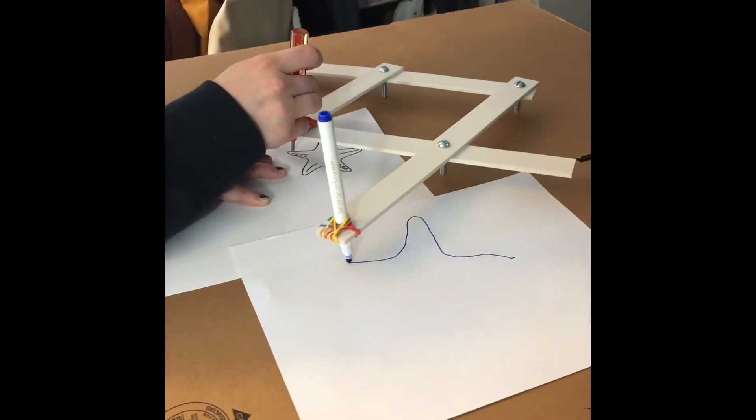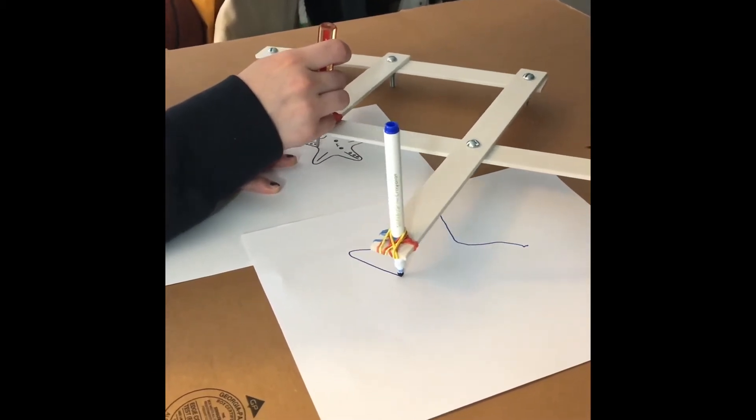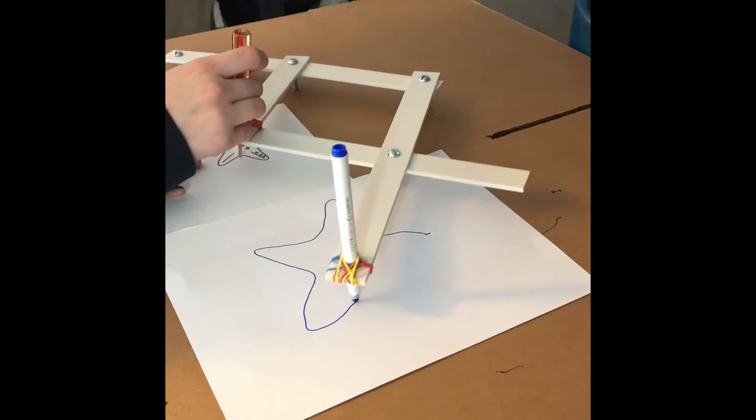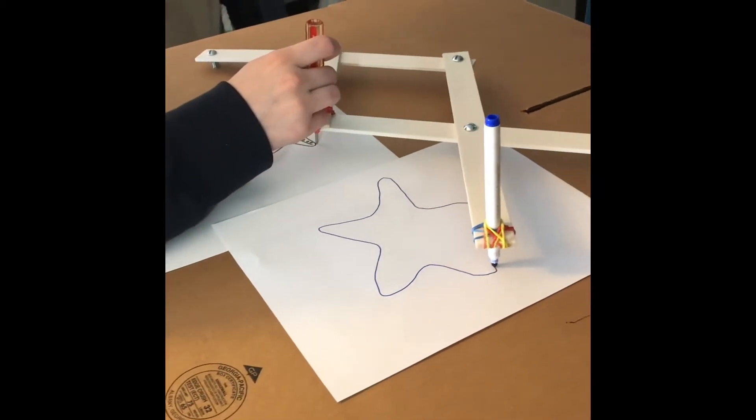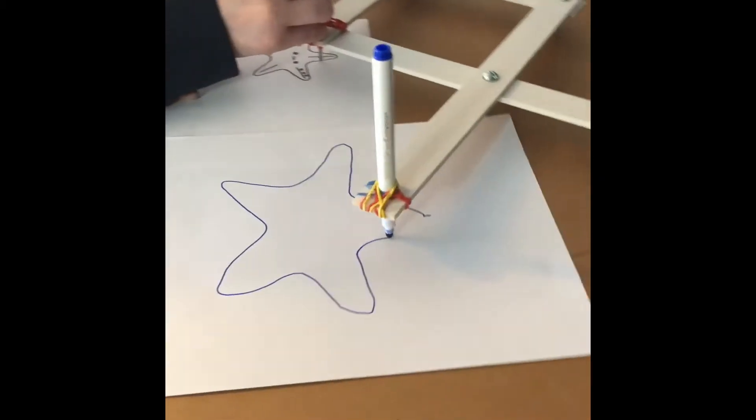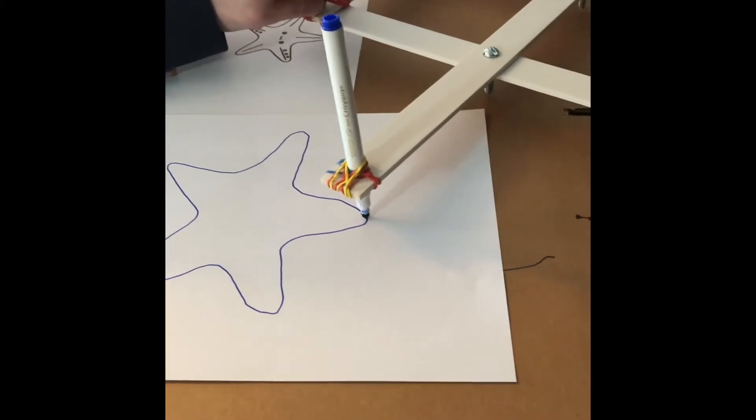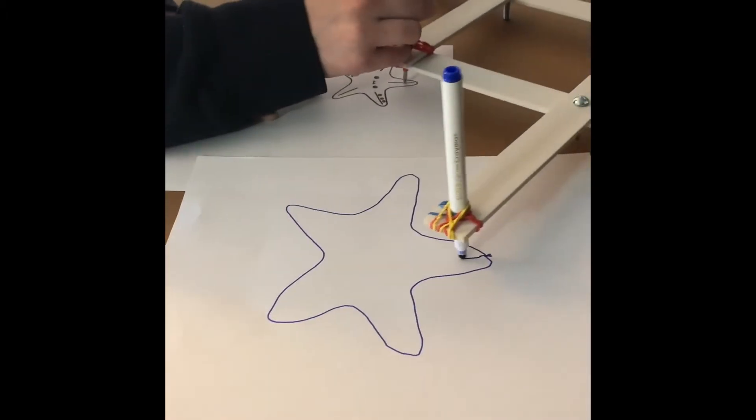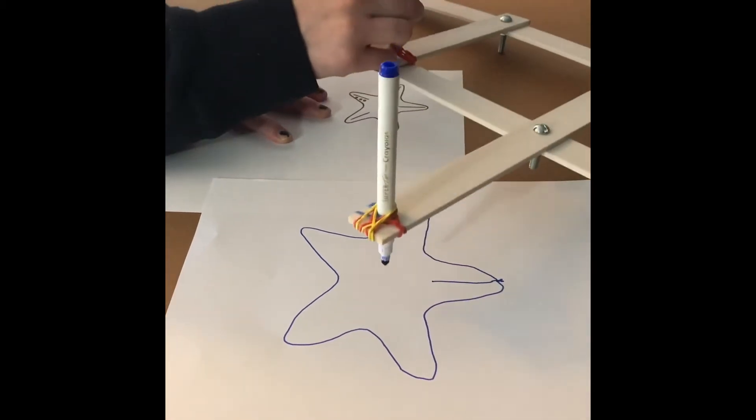As you can see, I have it anchored down on the left and then I use a screwdriver to trace the image of the starfish, and then the pen enlarges that image.